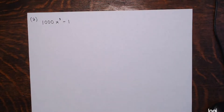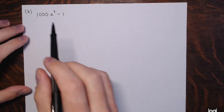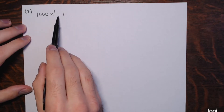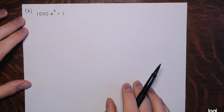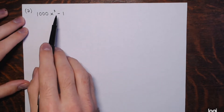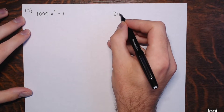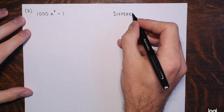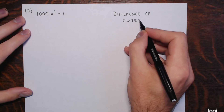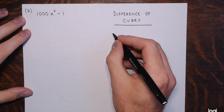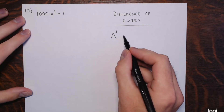Next we're going to see a difference of cubes, which has basically the same formula just with some sign changes. Here I have two terms — this time it's a difference, there's subtraction, and there are third powers — powers that are multiples of three. So if you have two terms, a difference, and the powers are multiples of three, there's a good chance it is a difference of cubes.